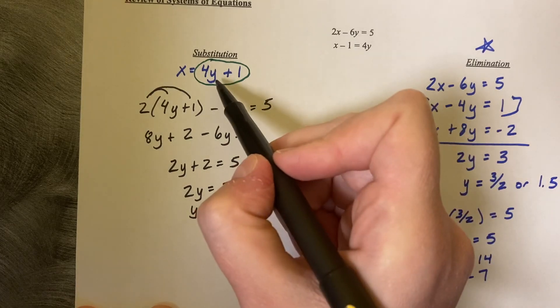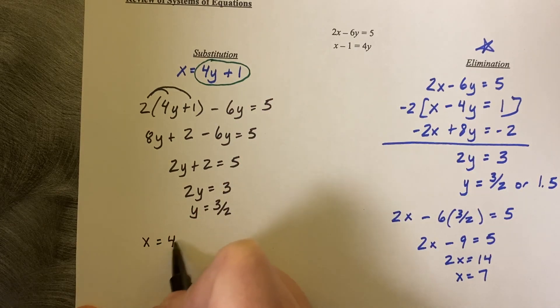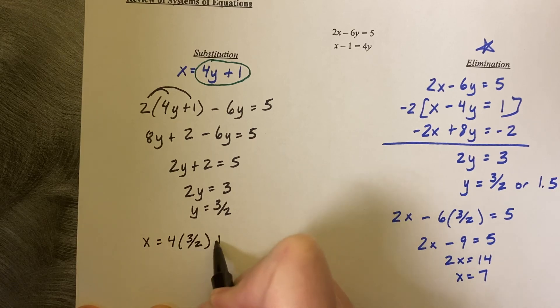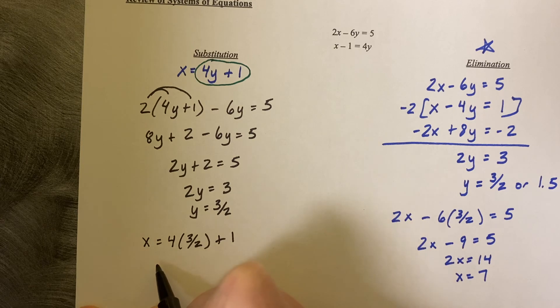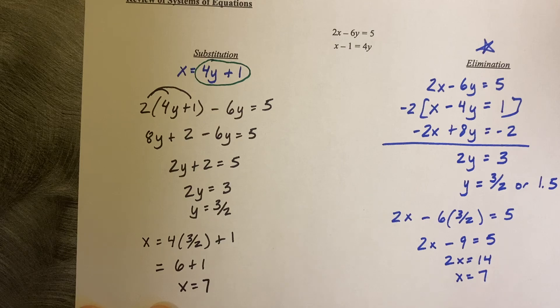Oh good we got the same thing and now we just plug this Y value back into our solved equation. X equals 4 times 3 halves plus 1. 4 times 3 is 12, 12 divided by 2 is 6, so X equals 7.